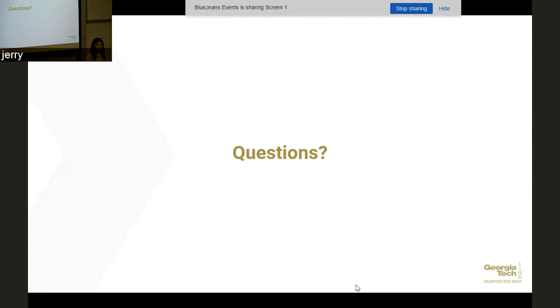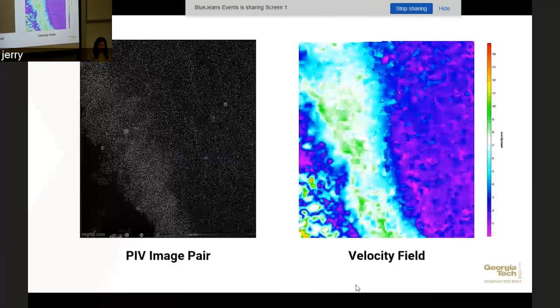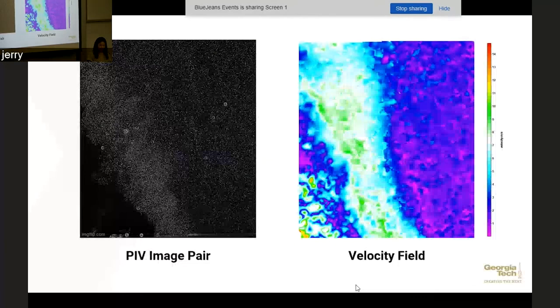We ended up using Tomo PIV. So yeah, that was kind of the next step. In the last two years that I've been doing research, we moved to Tomo PIV. I helped set up the optics with that, and we took data and now we are on the post-processing. So these images that I had, I wonder if I can pull them up. These pictures, I actually just took from the post-processing work that I was doing like yesterday. Perfect. Yeah, exactly.